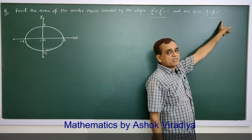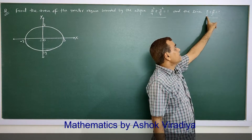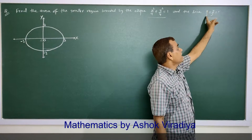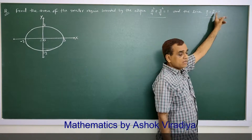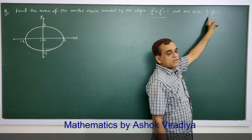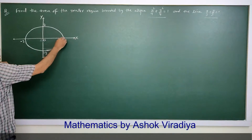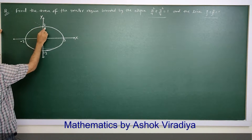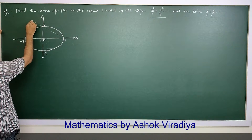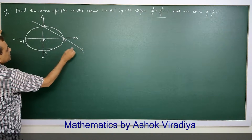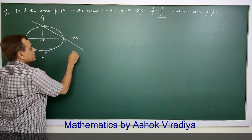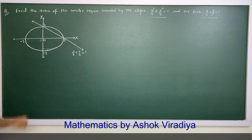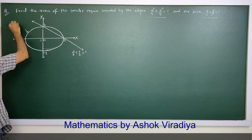Now this is a line making intercepts. Here the x intercept is 3 and the y intercept is 2. It is intercept form: any line in this form x upon a plus y upon b equal to 1, where a and b are intercepts. So the line is making x intercept 3 and y intercept 2, passing from these two points.